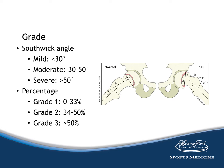The Southwick angle can be determined on both an AP and a frog-leg lateral x-ray view. First, draw a line perpendicular to the two edge points of the epiphysis. Line B is drawn at a 90-degree angle to line A, and line C is drawn directly down the center shaft of the femur. The angle between lines B and C is the Southwick angle. This angle is compared to the unaffected side to determine the degree of slip. If a contralateral hip image is unavailable, use 10 degrees on the frog-leg and 145 degrees on the AP as the baseline for normal angles.